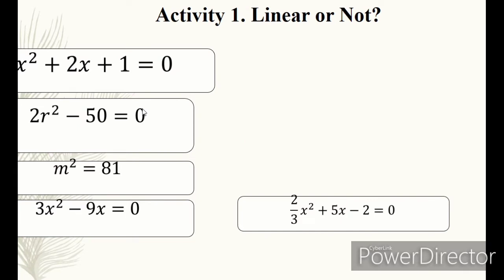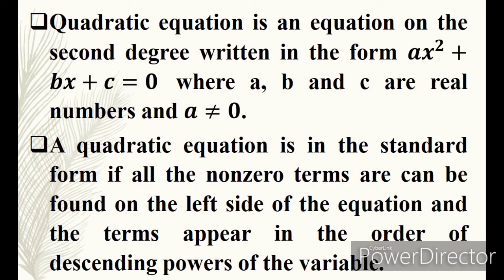Based on our activity, 5 out of 9 equations are not linear. These are the following: x squared plus 2x plus 1 equals 0; 2r squared minus 50 equals 0; m squared equals 81; 3x squared minus 9x equals 0; and two-thirds x squared plus 5x minus 2 equals 0. What have you observed about these 5 equations? Since linear equation is in the first degree of the exponent, as you can see, these are on the second degree. These equations are what we call quadratic equations.